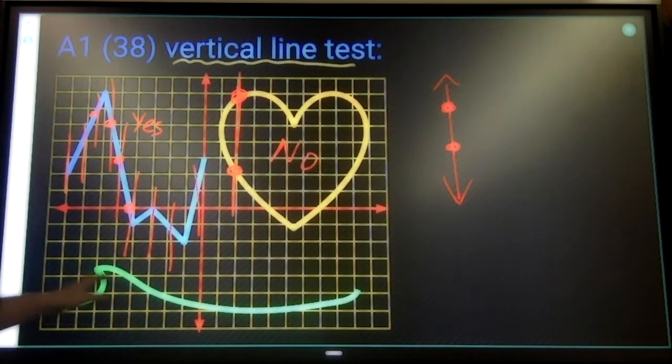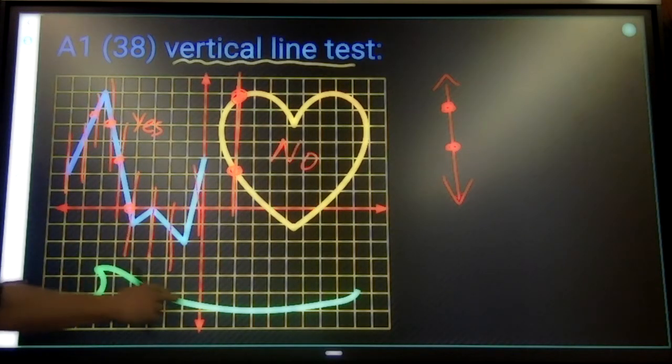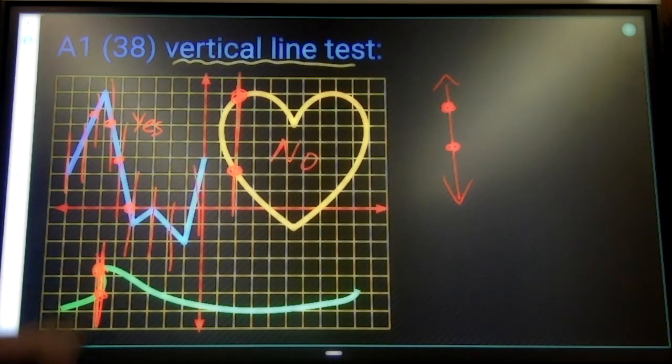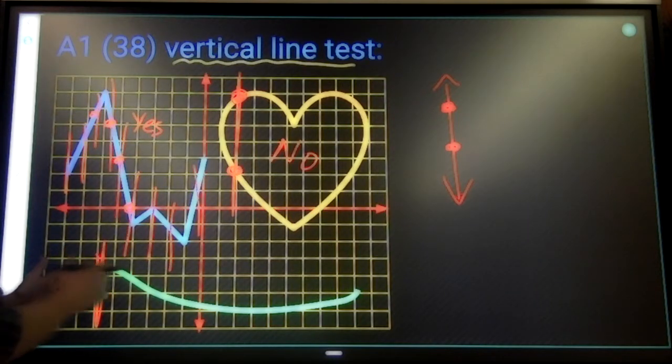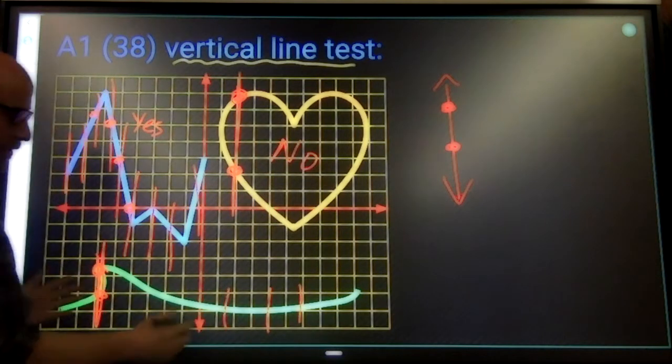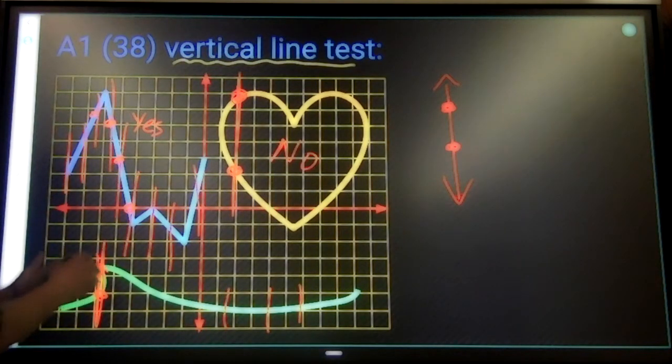This guy right here, this wave, is almost functional, but there's this one spot, this one little section right here, where I can draw a vertical line and go through more than one point. So even though for most of it I can draw a line and it only goes through one point, there is this one spot where I draw a vertical line and it goes through two points. So this is not a function.